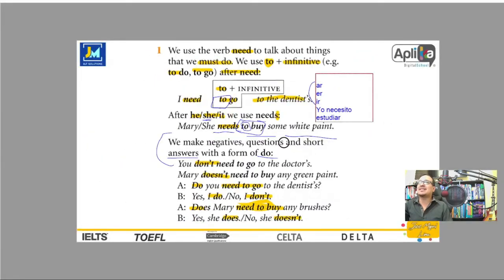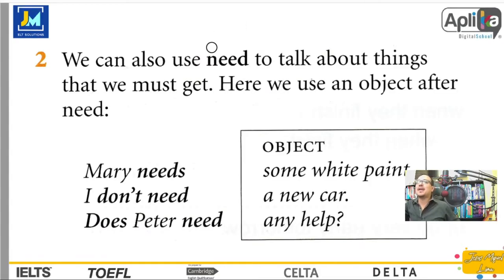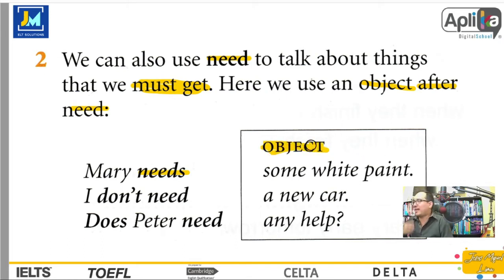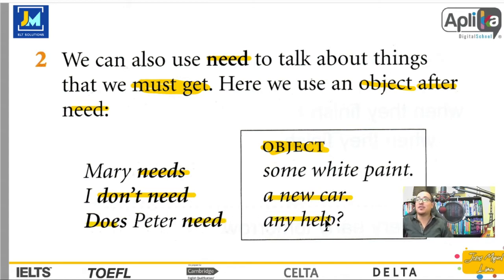We also use 'need' to talk about things that we must get — para hablar de cosas que debemos conseguir. Here we use an object after 'need'. For example: 'Mary needs some white paint' — the object comes after 'need'. I need a table, I need a new screen for my computer, etc. 'I don't need a new car.' 'Does someone need any help?'